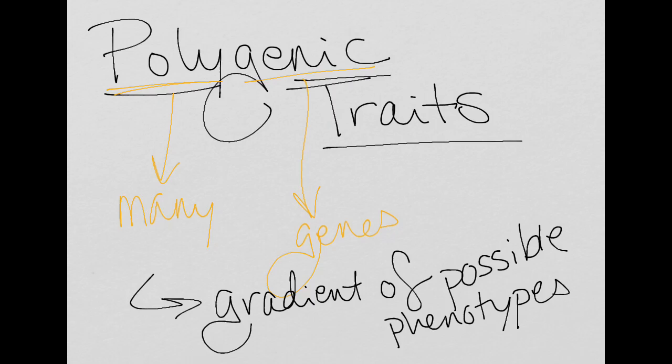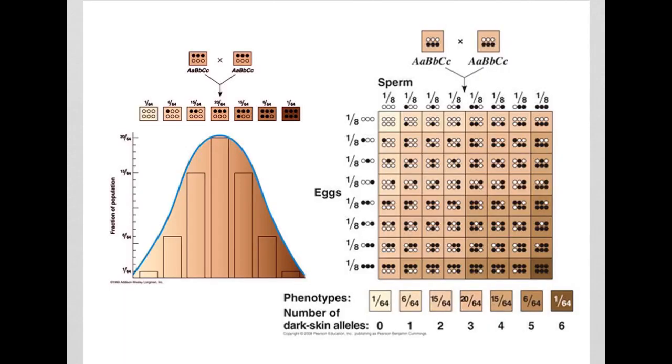For example, skin color is going to be a polygenic trait. Not everybody that is pale is the same shade of pale, or whatever you sort of imagine when you think pale. Not everybody that's tan has the same tan. And not everybody that has dark skin has the exact same color dark skin.